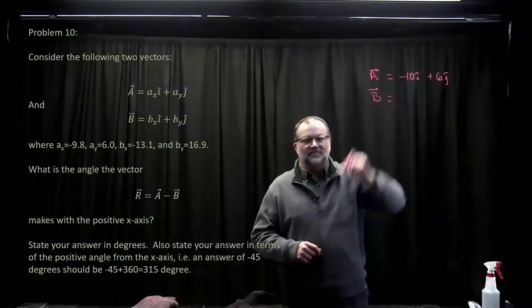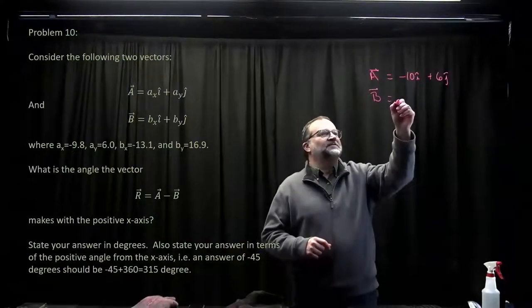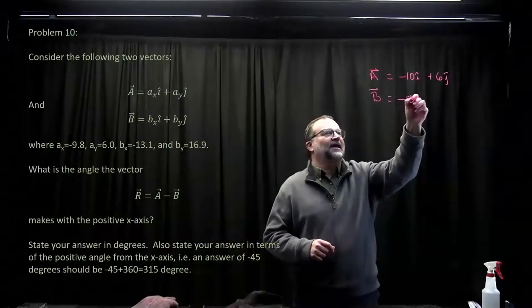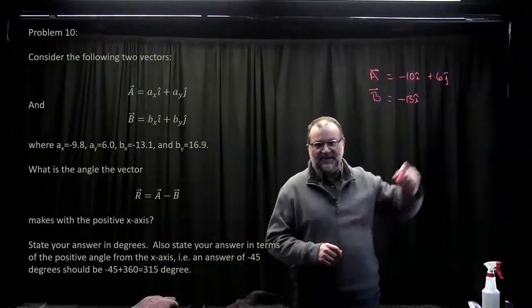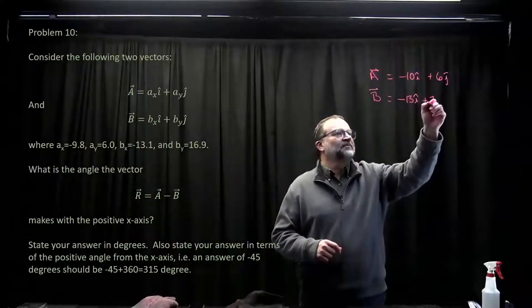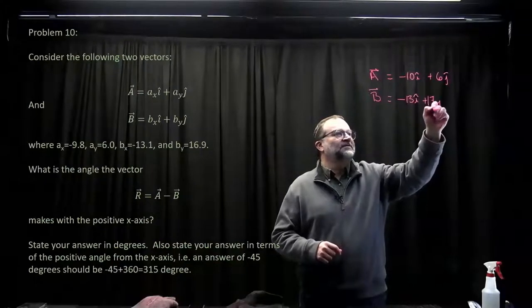And b, b is minus 13 i-hat plus 17 j-hat.